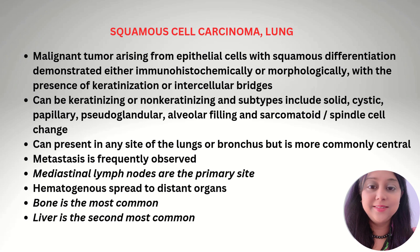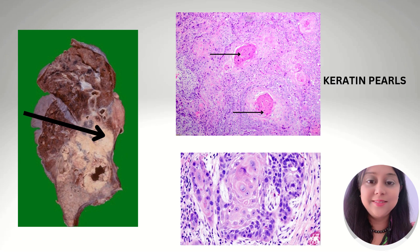It can present in any side of the lung or bronchus but more commonly involves the central region. Metastasis is frequently observed, with mediastinal lymph nodes as the primary site. Hematogenous spread occurs to distant organs, with bone being most common and liver second most common. The gross image and micrograph show squamous cell carcinoma growth with keratin pearls and squamous neoplastic cells.